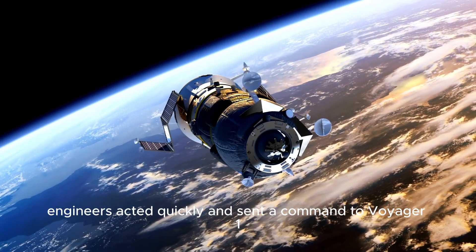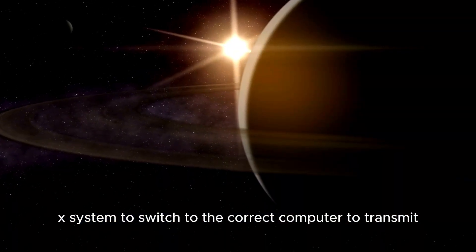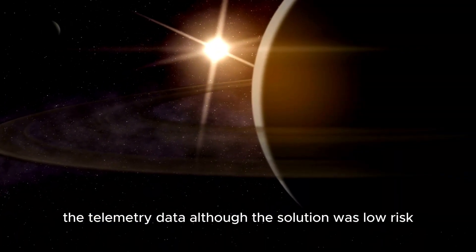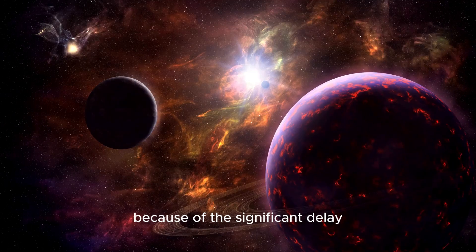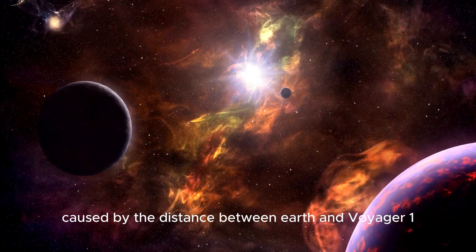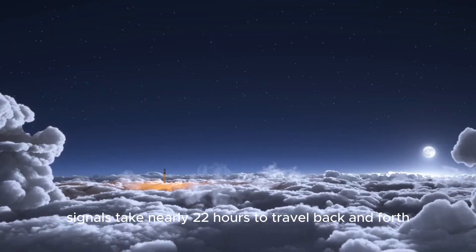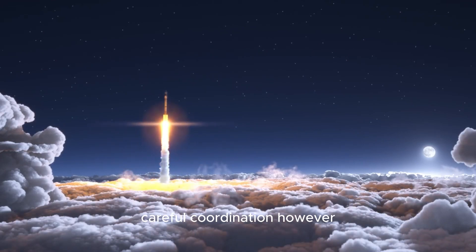Engineers acted quickly and sent a command to Voyager 1 instructing the AACS system to switch to the correct computer to transmit the telemetry data. Although the solution was low risk, it required a great deal of patience because of the significant delay caused by the distance between Earth and Voyager 1. Radio signals take nearly 22 hours to travel back and forth.